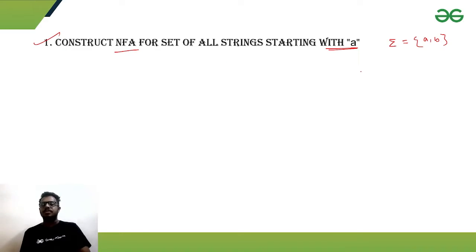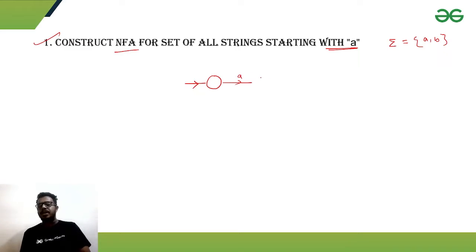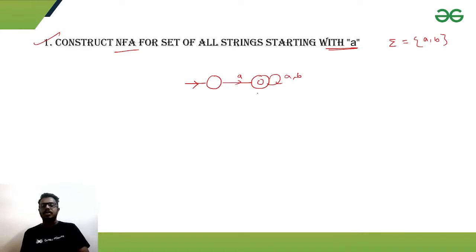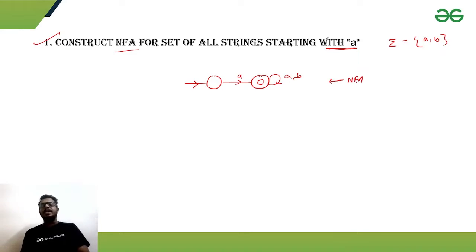The language is the set of all strings starting with 'a'. So if we get 'a' as the first symbol, the string will be accepted — after that, whatever comes, we don't care. If we get 'a' as the first symbol, the string is accepted. That is the NFA.